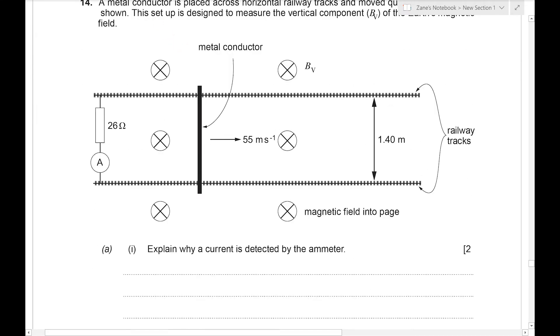Now we can see a diagram with things like the field going into the page, so we're looking from above, and a 26 ohm resistor. The rails are 1.4 meters apart and the speed of our conductor is 55 meters per second.